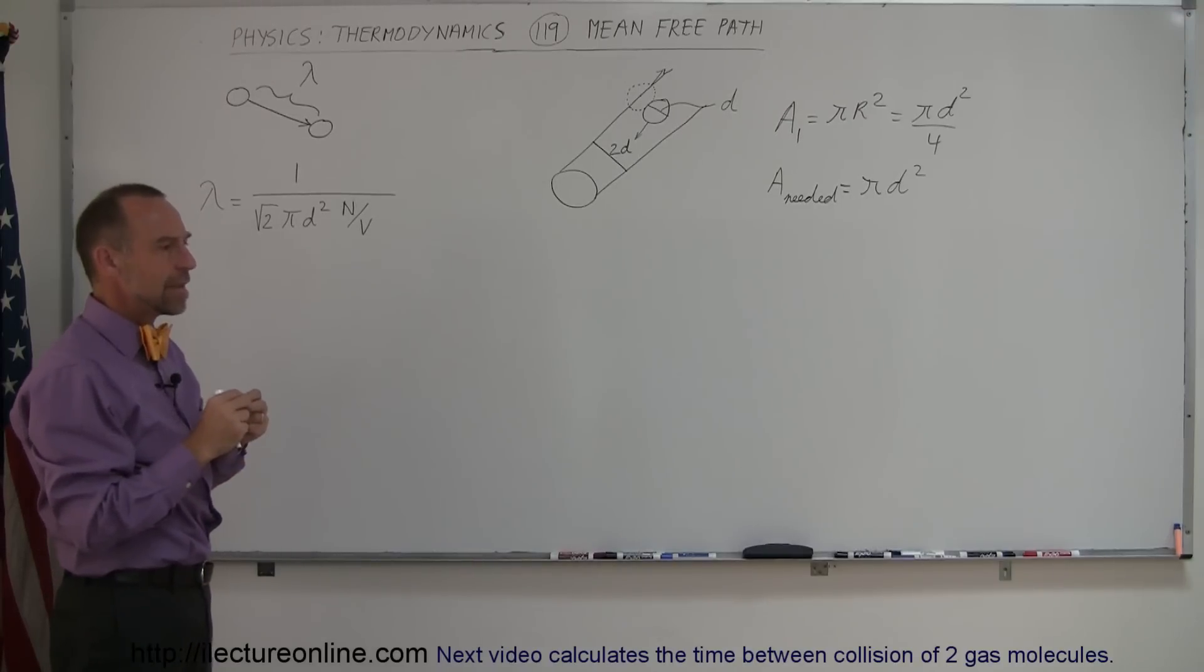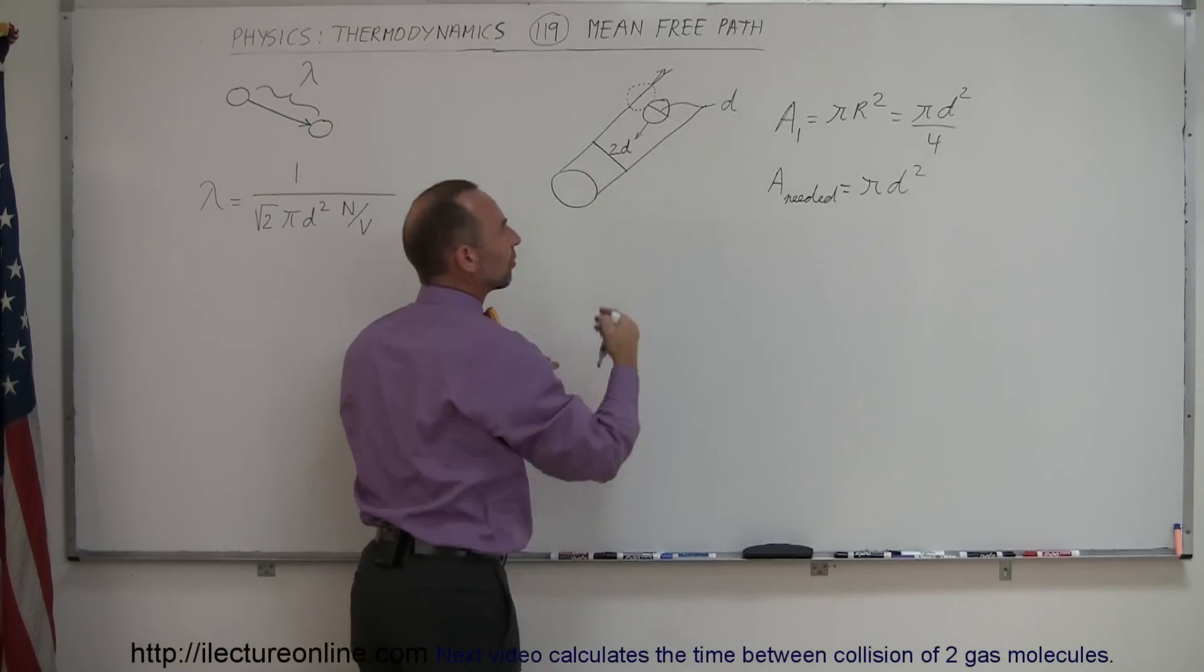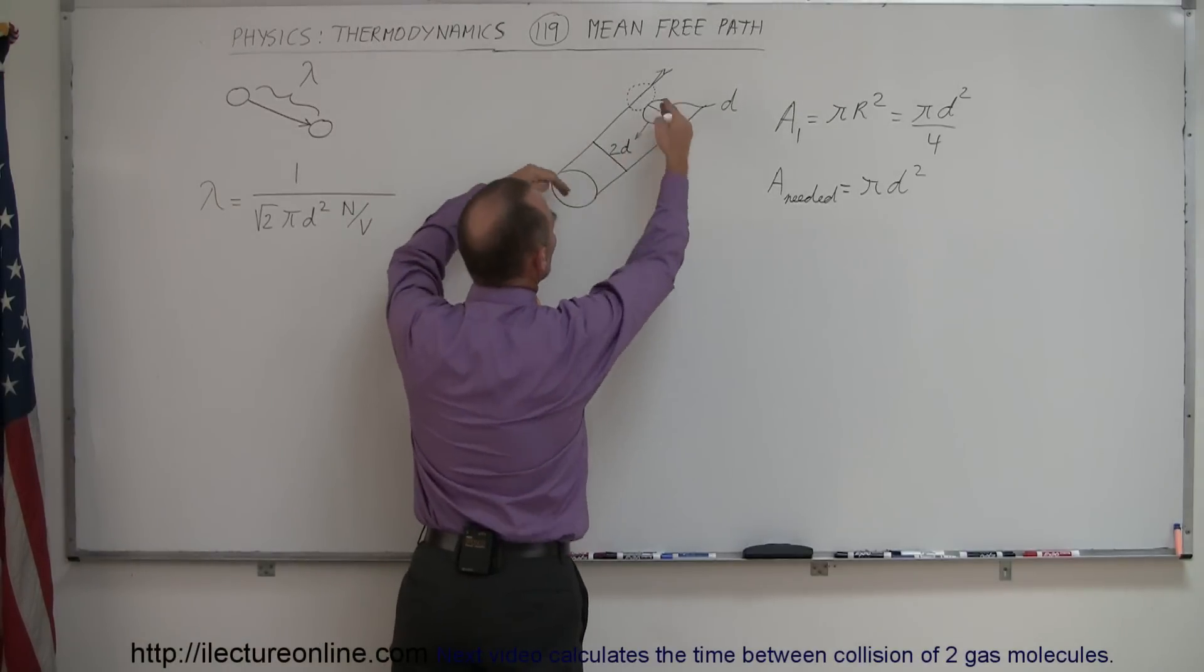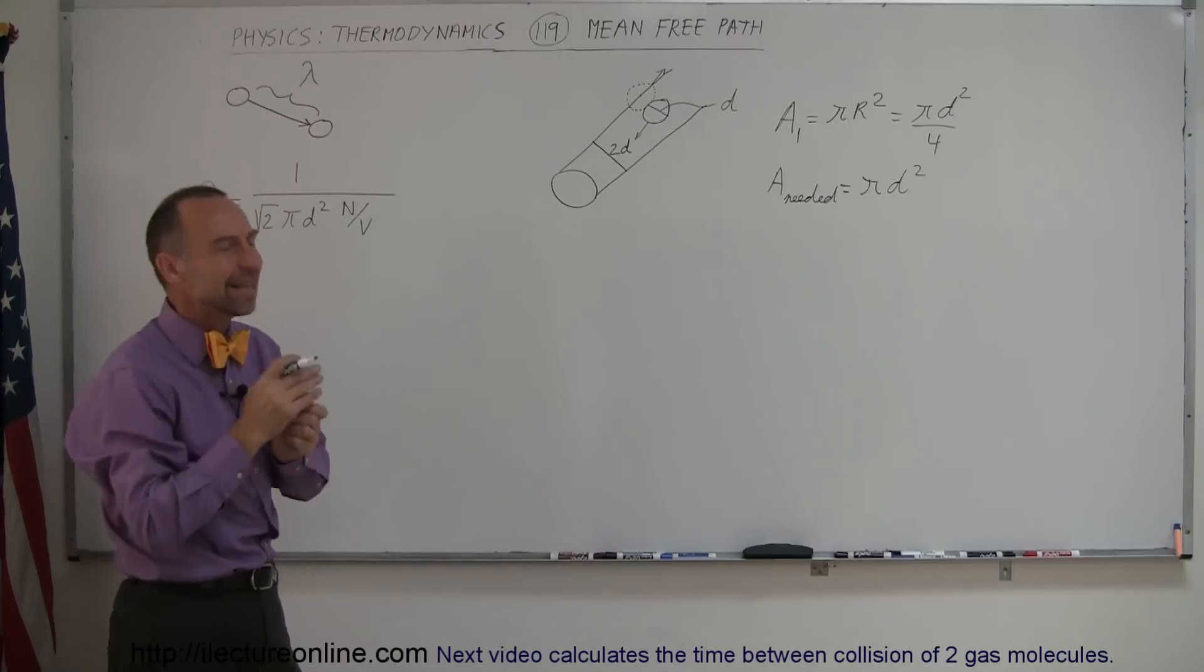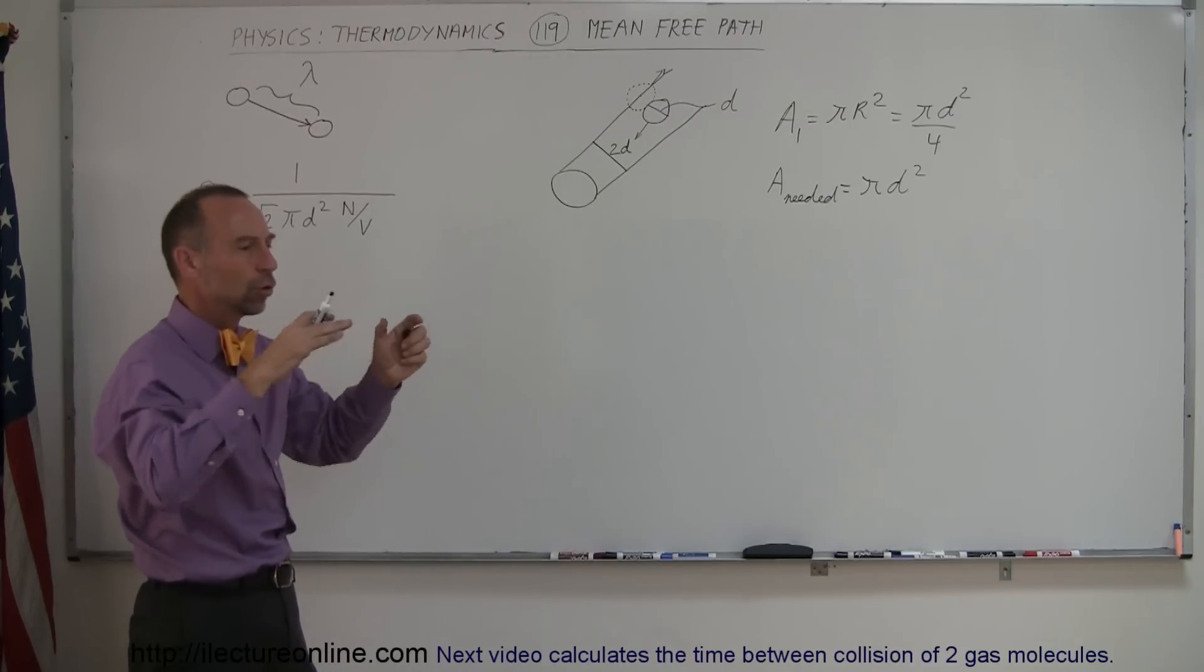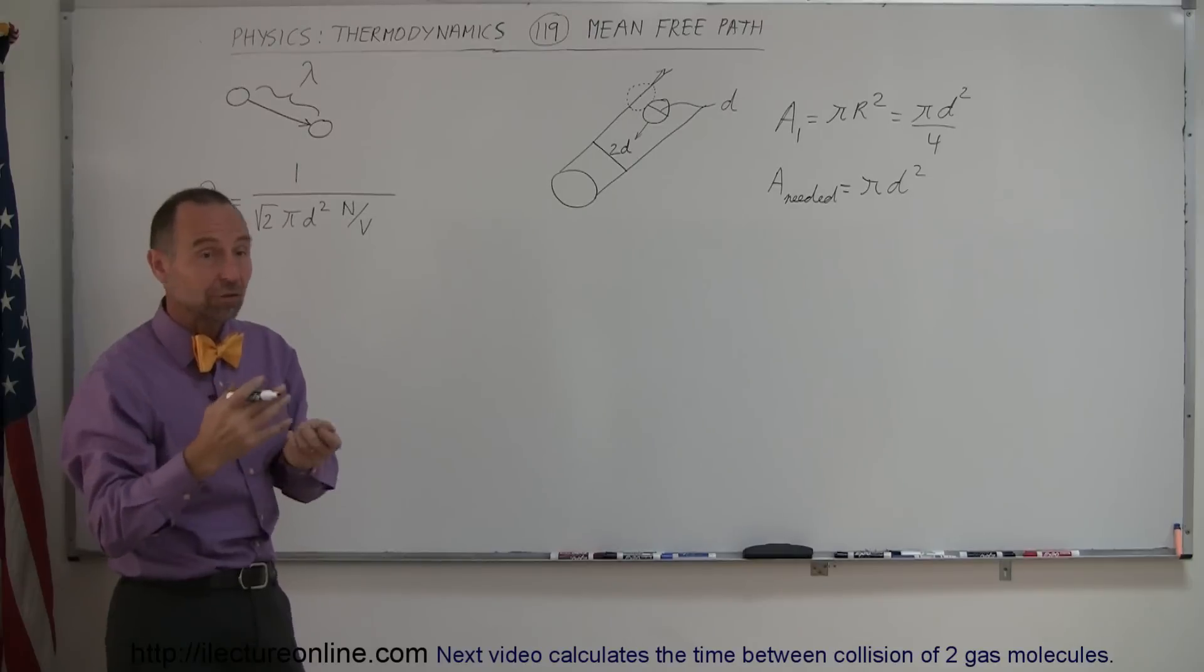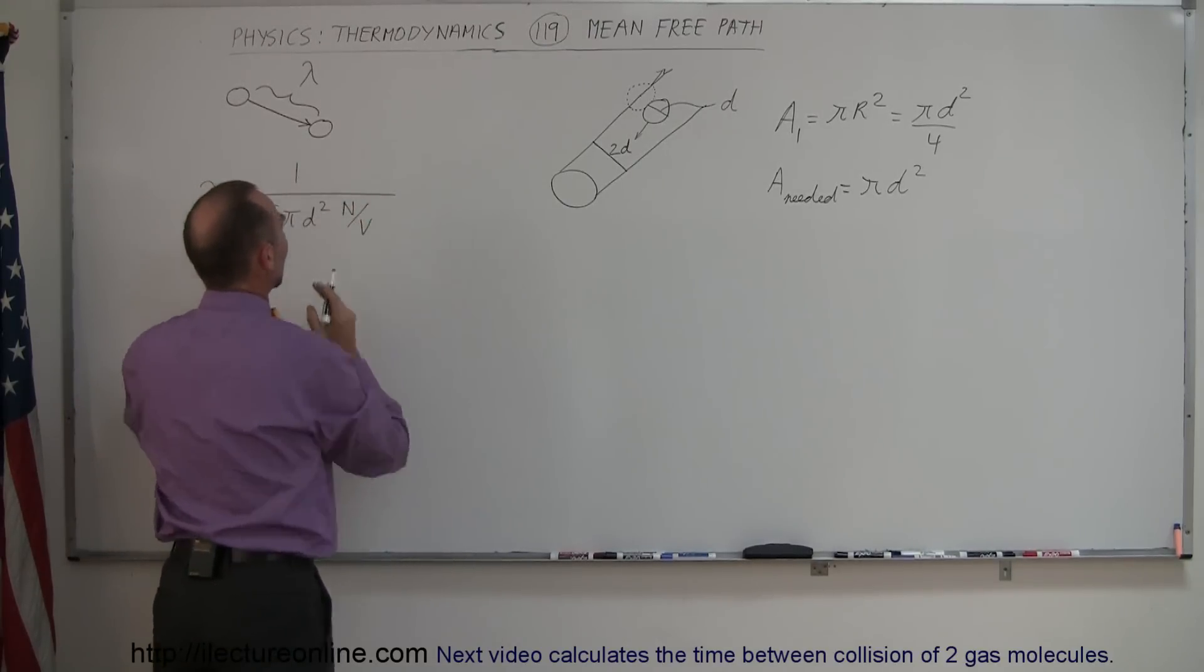Then if we realize that it travels with a particular velocity like that, how much space does the molecule have in this tube before it collides with another molecule? Well that depends upon the density of the molecules. So if we take the total number of molecules and divide it by the volume, we have a measure of the density. So we're going to multiply this times n over v.